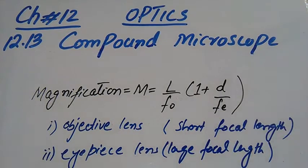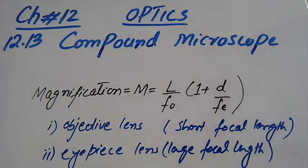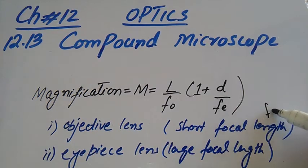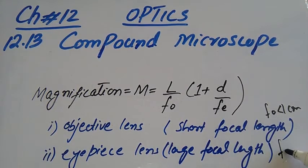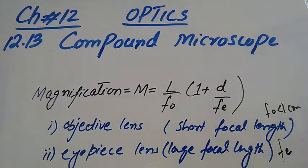One lens is the objective lens, which has a short focal length. The second lens is the eyepiece, which is close to our eyes. The focal length of the objective lens is less than one centimeter, while the focal length of the eyepiece is about a few centimeters.